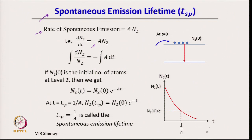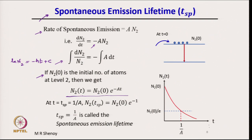Rearranging: dN2/N2 = −A·dt. Integrating, we get ln(N2) = −At + C. If N2(0) is the initial number of atoms at level 2, we find the constant C and obtain N2(t) = N2(0) · e^(−At).